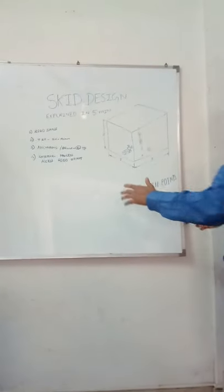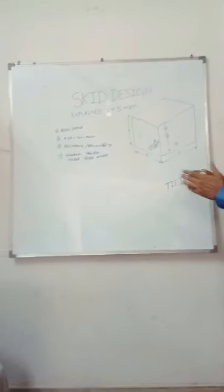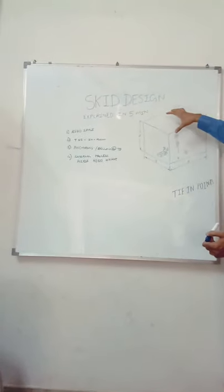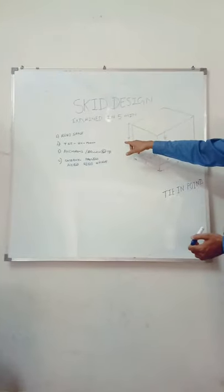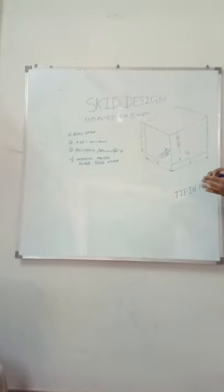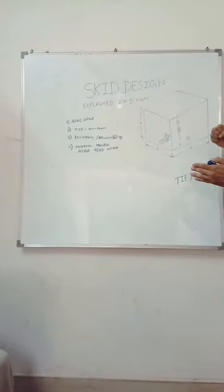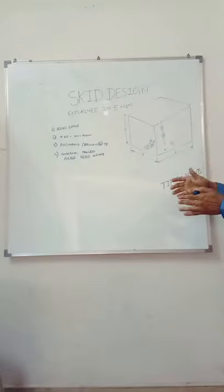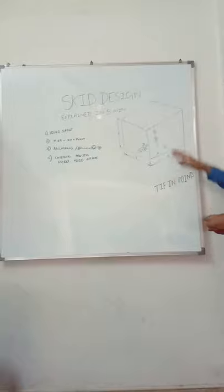If I want to design a skid, first and foremost important is I need to have some process. For that process it will have input connection and output connection. Once this skid is designed and placed in the plant, there are certain lines which are connected to the input, and there will be a process inside the skid. After the processing, whatever output or finished product is then transferred via output connections.